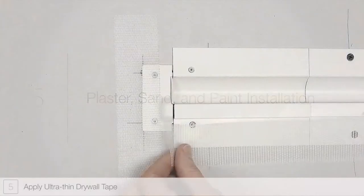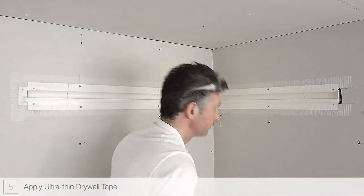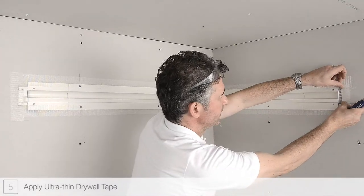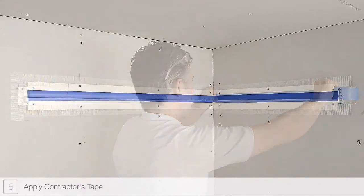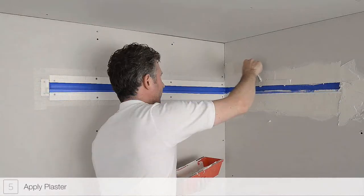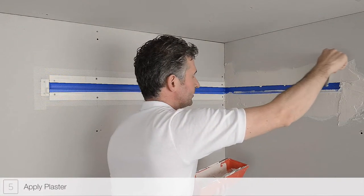Step 5: Apply ultra-thin drywall tape to the reveal channel. Do not overlap sections of the drywall tape. Mask the interior of the channel using contractor's tape. This will help prevent dust or debris from entering the channel.